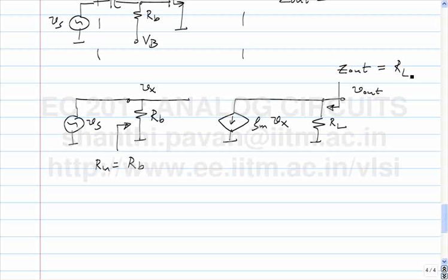In principle, we can make Rb very large, so the input impedance can go to infinity. Can the same be said for the output? The output impedance is Rl, so if I make Rl equal to zero, the output impedance goes to zero. However, the gain also goes to zero. So if you want a large gain, you cannot choose Rl to be zero. This is the basic building block we have.